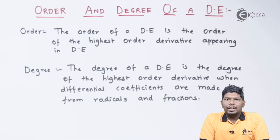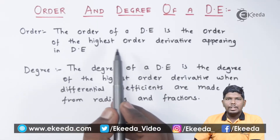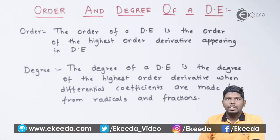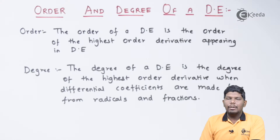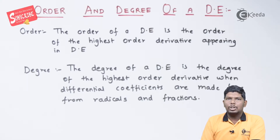What is basically the order of a differential equation? The order is the order of the highest order derivative present in a differential equation. The first derivative means dy by dx, the second derivative means d²y by dx². As we increase the number of the derivative, its power increases, and that power is called the highest order derivative.